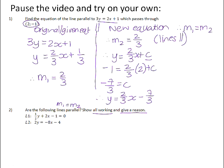So if line 1 and line 2 have the same gradient, then they will be parallel. If they don't have the same gradient, then they will not be parallel.